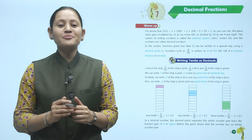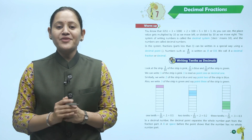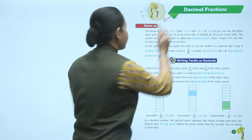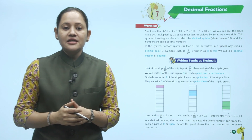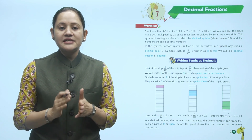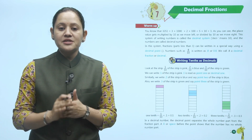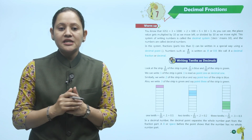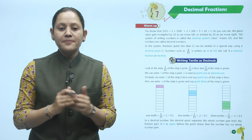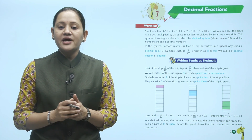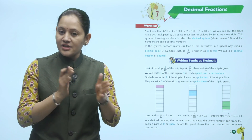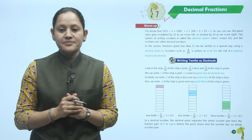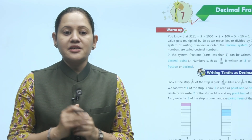Hello kids, welcome to today's maths class. Today we will do decimal fractions. You know that 3251 equals 3 into 1000 plus 2 into 100 plus 5 into 10 plus 1. The place value gets multiplied by 10 as you move left, or divided by 10 as you move right. This system of writing numbers is called the decimal system.